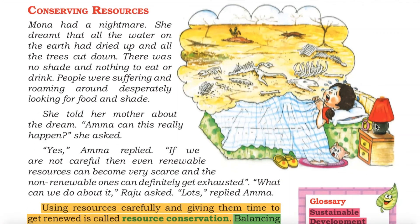Conserving resources. Mona had a nightmare. She dreamt that all the water on the earth had dried up and all the trees were cut down. There was no shade and nothing to eat or drink. People were suffering and roaming around desperately looking for food and shade.